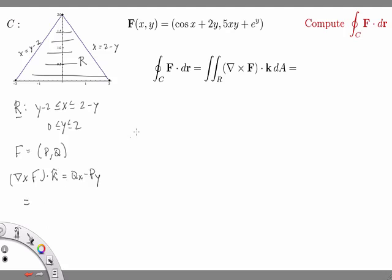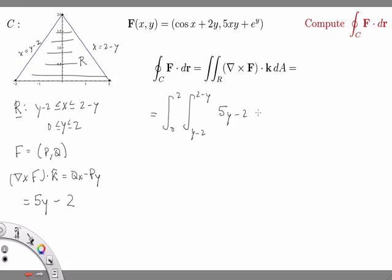In our case, Q is 5xy plus e to the y, so Qx equals 5y — the partial derivative with respect to x. On the other hand, the partial derivative of P with respect to y: the cosine x term vanishes, and the derivative of 2y with respect to y is 2, so Py equals 2. Therefore, the line integral of F dot dr over C equals the iterated integral from 0 to 2, and from y minus 2 to 2 minus y, of (5y minus 2) dx dy.